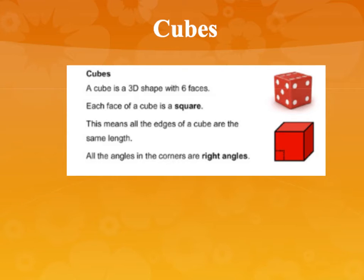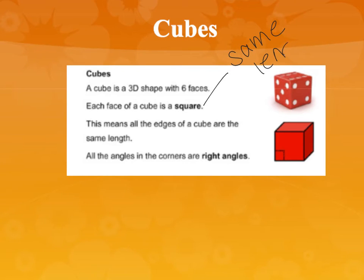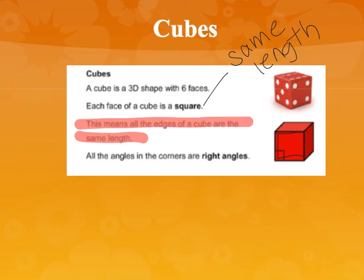So a cube is a 3D shape with six faces. Each face of a cube is a square. This means all the edges of the cube are the same length. Remember, a square has all the same length sides. So if a cube is just made up of a bunch of squares, all of the edges are going to be the same length no matter what.